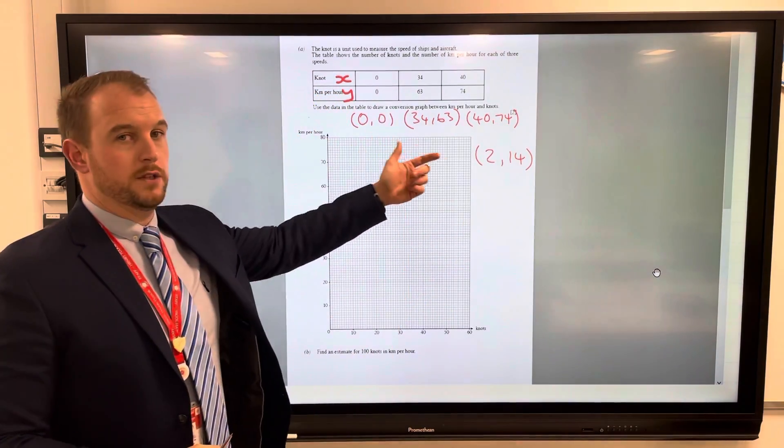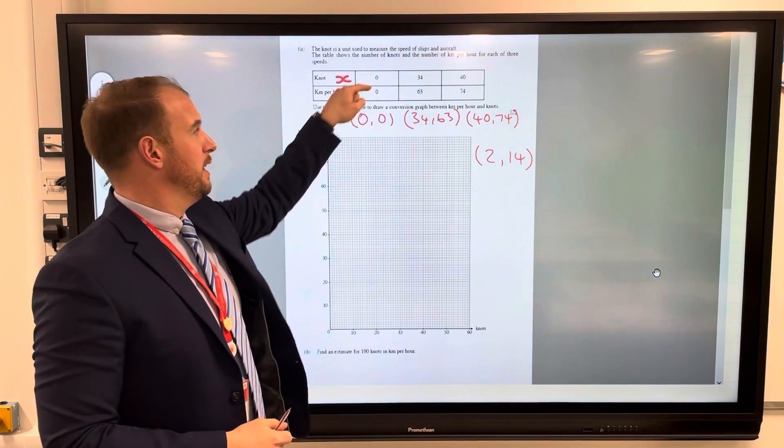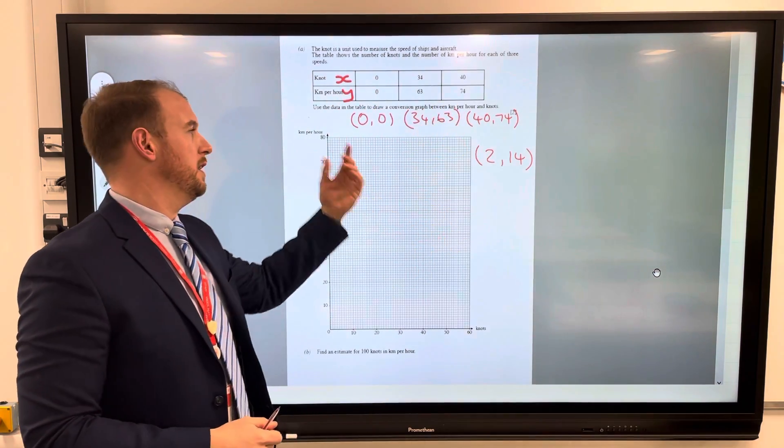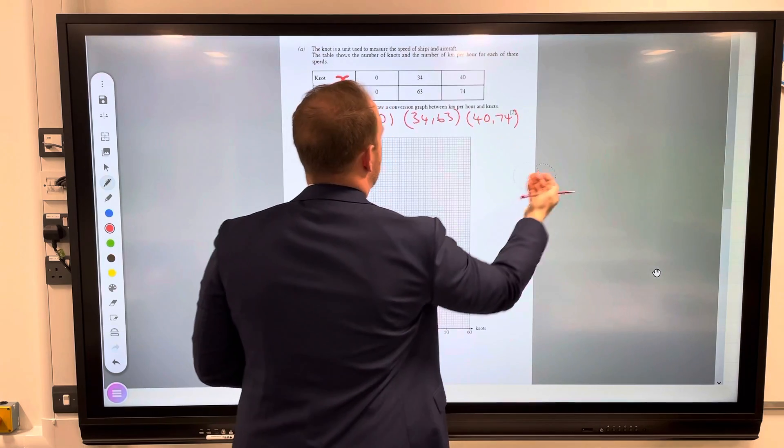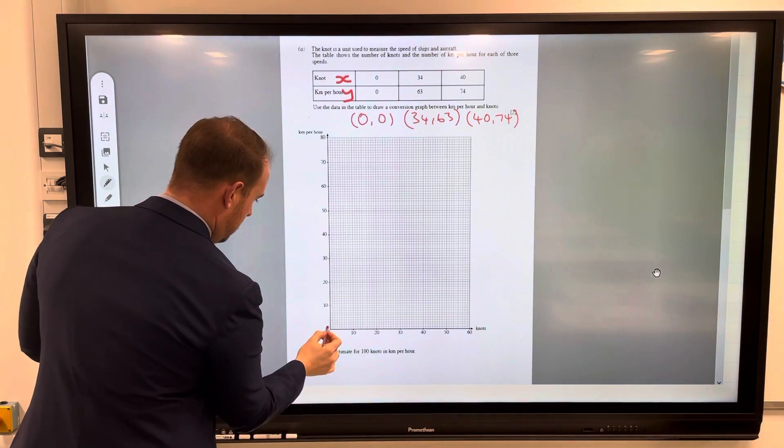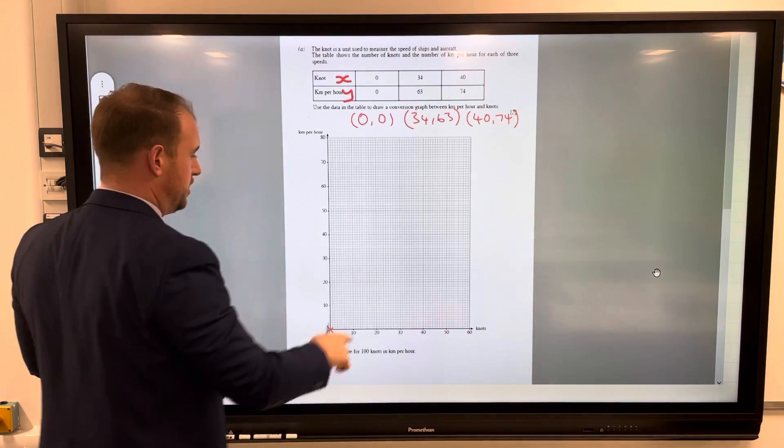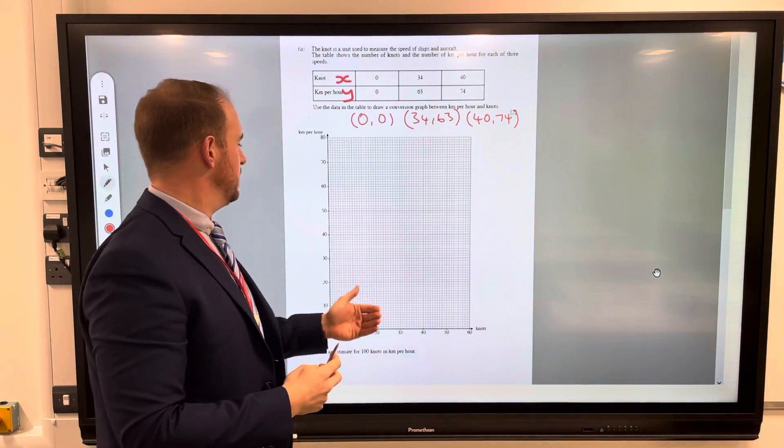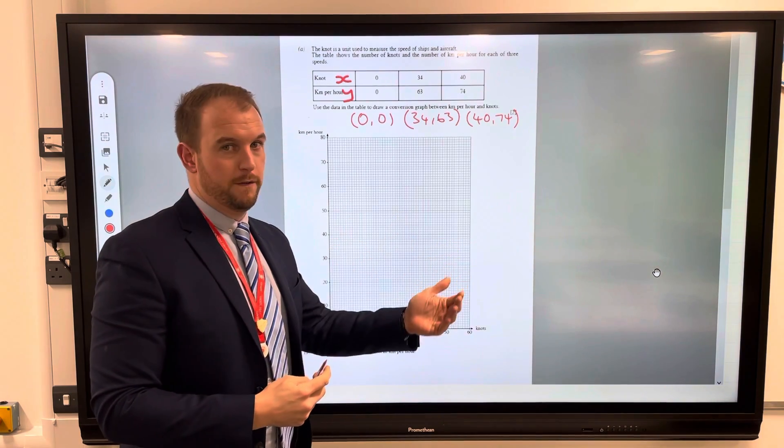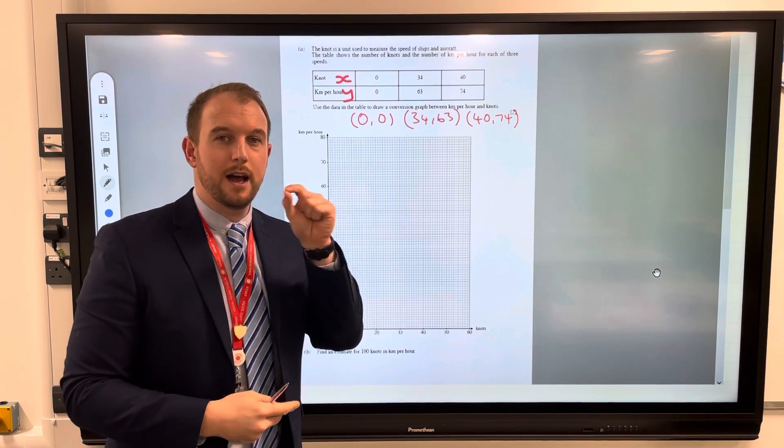We get two marks for plotting these points. Now the first mark is obviously identifying that these are coordinates and then the second mark then for actually plotting them yourself. So zero zero, well that would be there. 34, 63, so 34, be careful with the scale. A lot of these tend to obviously put you off and then you have to be careful about the scale.